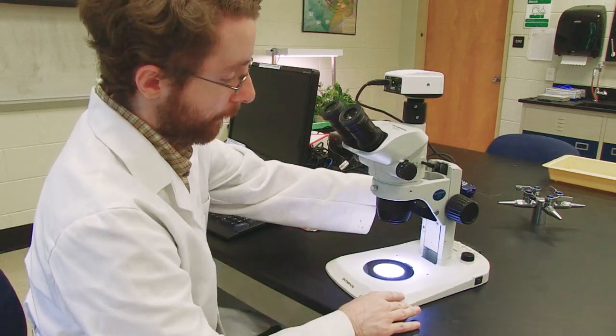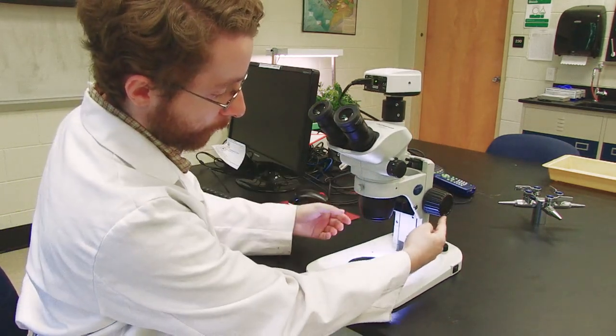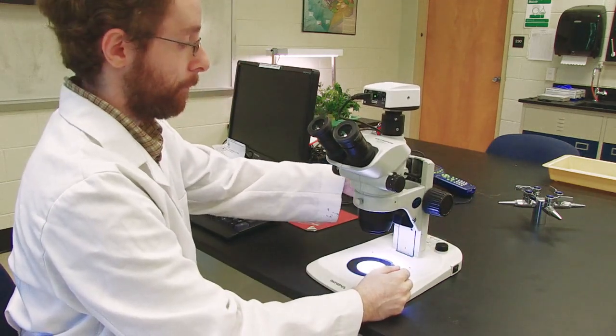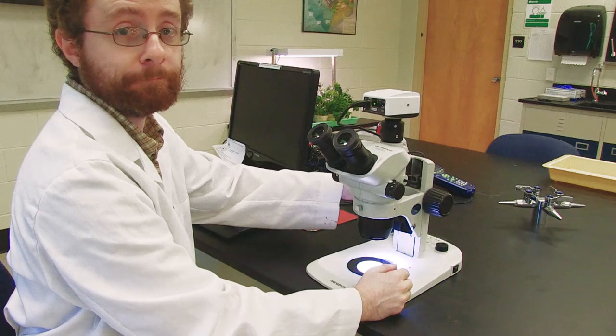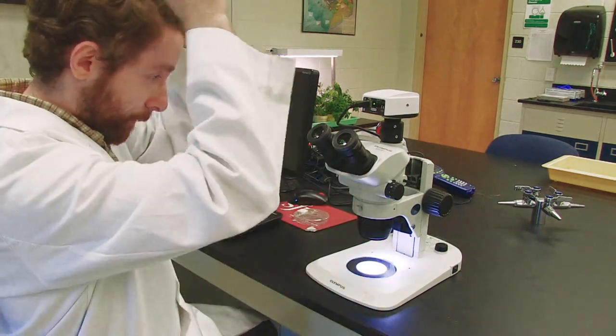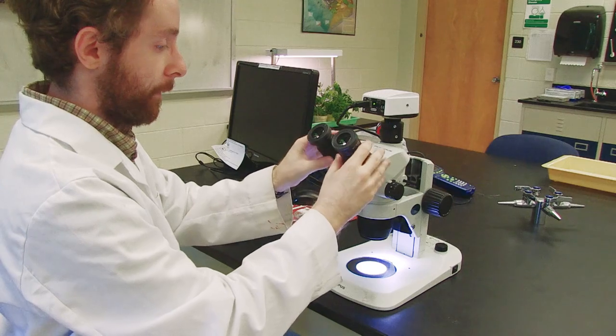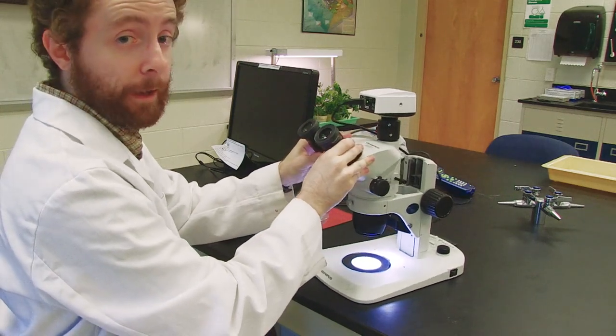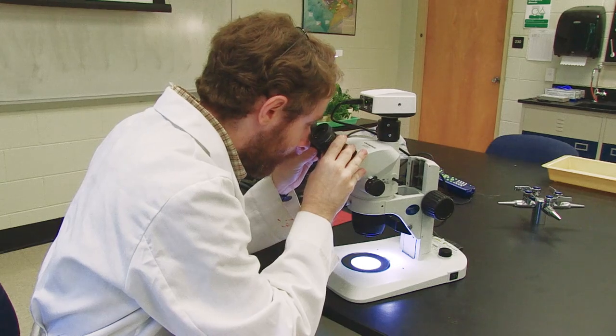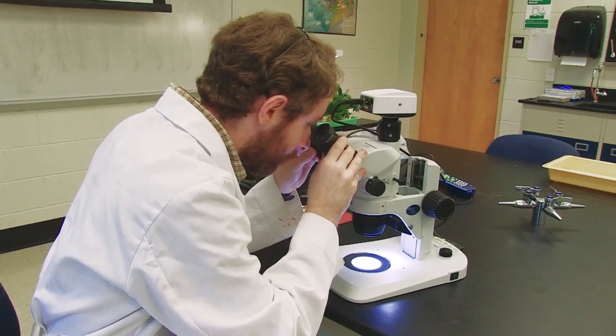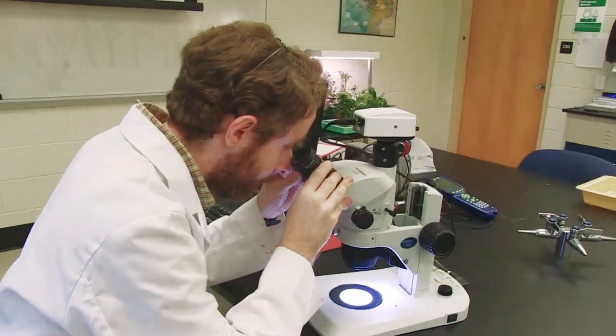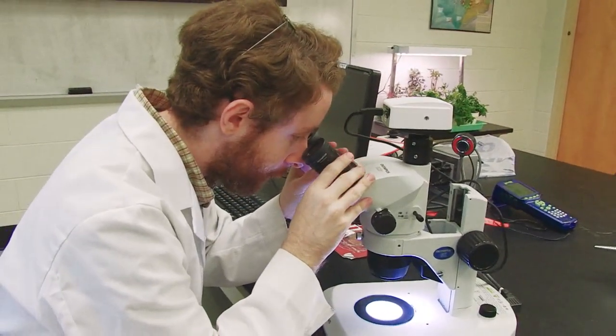We begin by taking our focus knob and bringing it all the way down to the bottom. I next take my oculars and like a pair of binoculars, I'm going to look through the microscope and adjust the oculars until I see one field of view, so one circle.